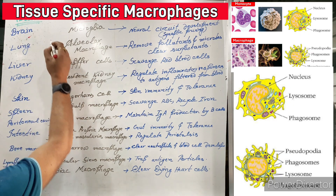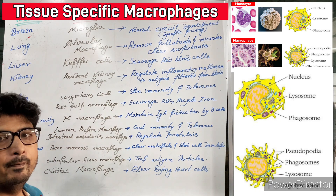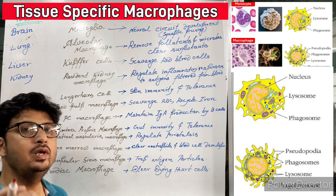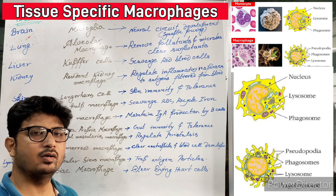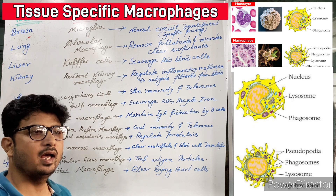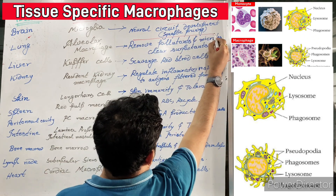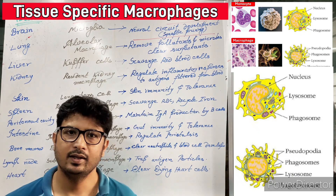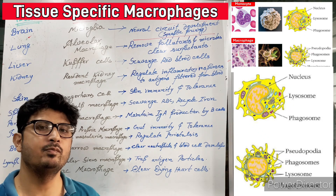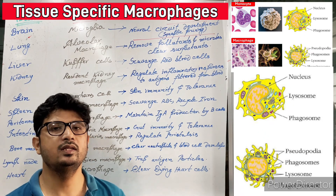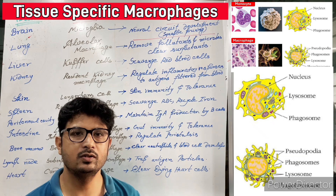First, consider the brain. The brain contains microglia — microglia are nothing but specialized macrophages that stay only in the brain. Microglia will not be found in your skin, intestine, or anywhere else; they are present in the brain only. They do neural circuit development by synaptic pruning — anything unwanted is pruned so that synaptic development is proper. If there are any abnormalities or anomalies in synaptic exchange, these macrophages come and repair this by digesting the unwanted materials and resolving the matter.